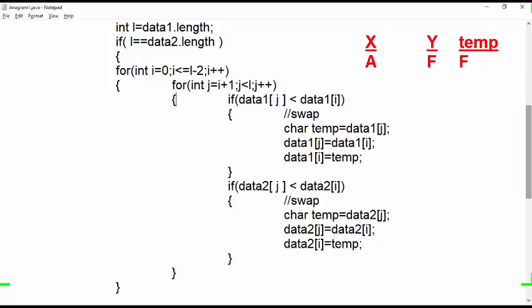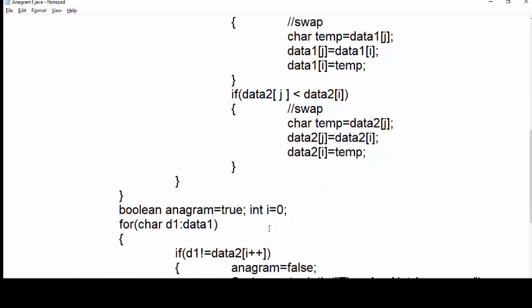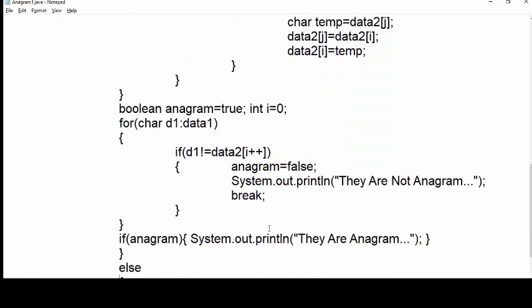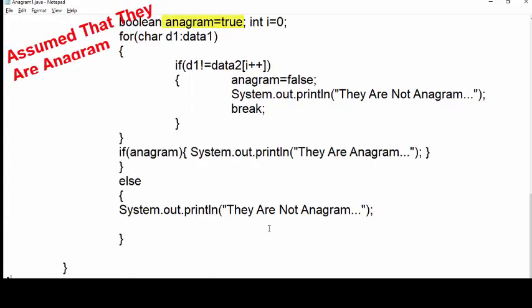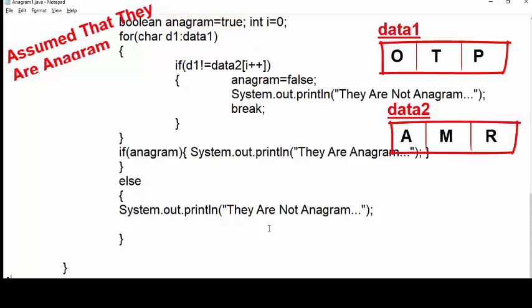And here we are done with linear sort. Our next step is to check whether they are equal. To do this, we assume they are anagram. So before we start the loop, anagram variable is initialized to true. Here we need to compare every character of data1 with data2. For this, we use for-each loop. As we know that for-each loop iterates through each and every element of the array, so we write for char d1 colon data1.